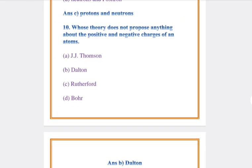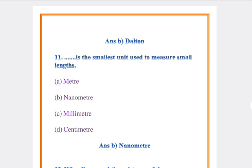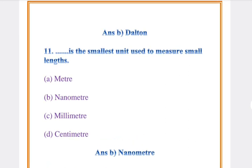Question number 10: Whose theory does not propose anything about the positive and negative charges of an atom? Answer: B, Dalton. Question number 11: Das is the smallest unit used to measure small lengths. Answer: B, Nanometer.